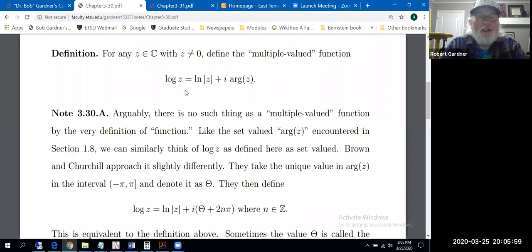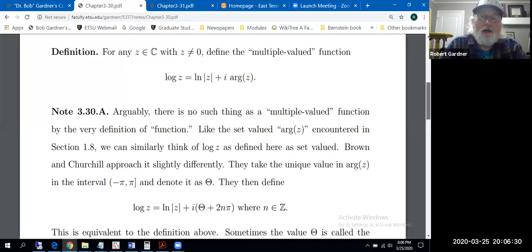And then I ramble on in the notes about the tragedy of a multiple valued function. So what we're really getting in this previous definition is a multiple valued function in the same sense that little arg is a multiple valued function. But we had capital Arg, the principal argument function, which was indeed a function, and that'll lead us to a principal branch of the logarithm. So principal will play a role here, just as principal played a role in the setting of arguments.